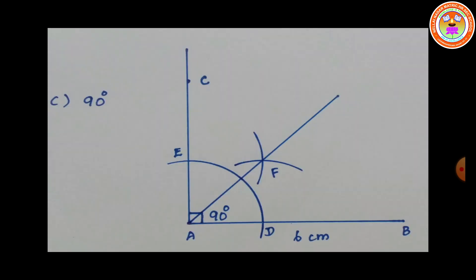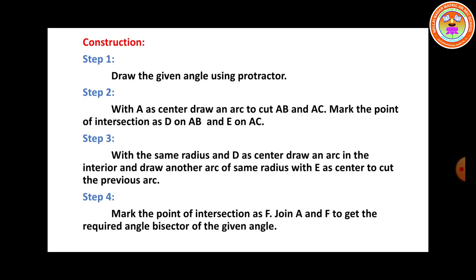Construction: Draw the given angle using protractor. With A as center, draw an arc to cut AB and AC; mark intersections D on AB and E on AC. With the same radius and D as center, draw an arc in the interior; with same radius and E as center, draw another arc to cut the previous arc. Mark the intersection as F. Join AF to get the required angle bisector. D and E is homework — do the homework and give it to your teacher.